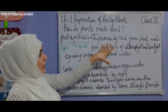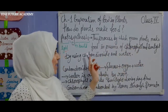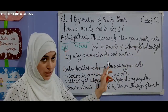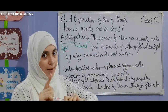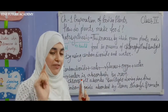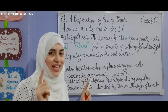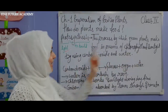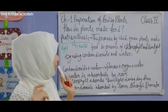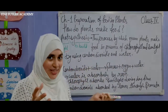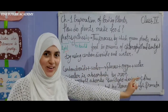So let's understand the process by which green plants make food in the presence of chlorophyll. Green colored leaves use chlorophyll and sunlight, which is available in the daytime, and they use carbon dioxide and water.